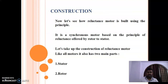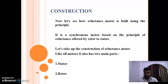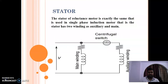Now let us see how the reluctance motor is built using the principle previously discussed. It is a synchronous motor based on the principle of reluctance offered by the rotor to the stator. Like other electromechanical machines, the reluctance motor also has two parts: stator and rotor. The stator of the reluctance motor is exactly the same as that used for a single-phase induction motor.